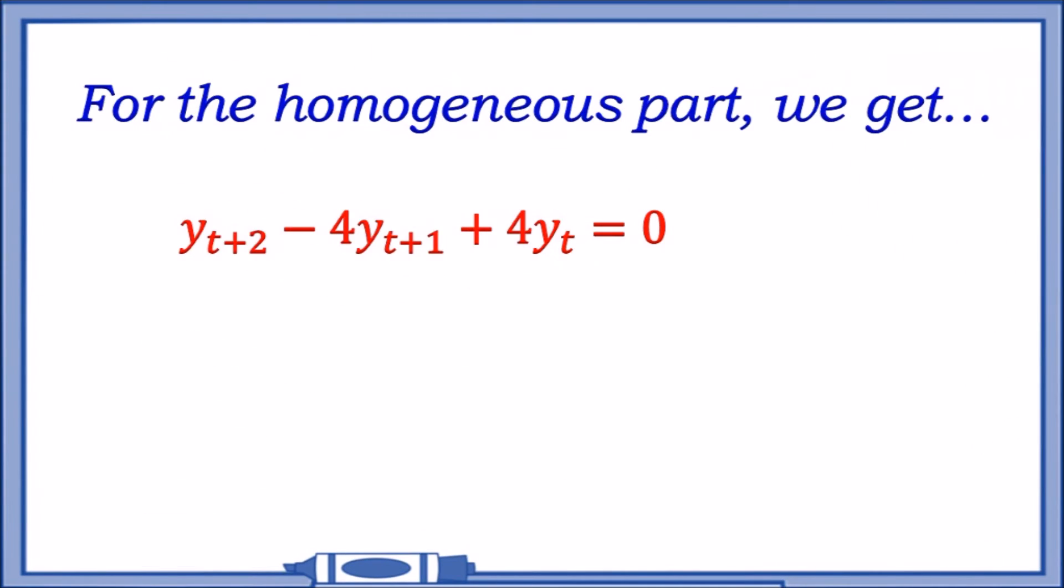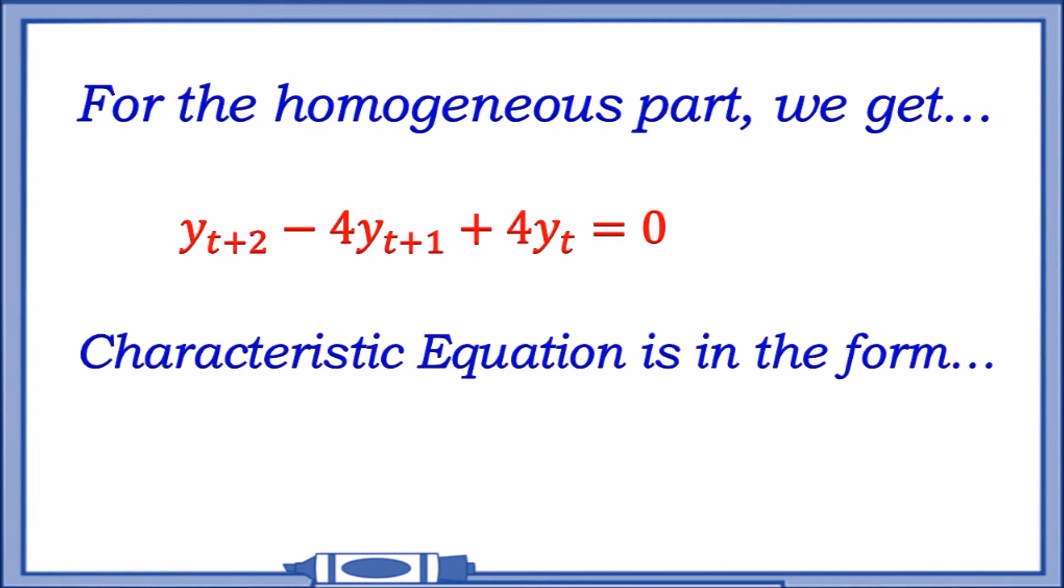We set the left-hand side to equal zero for the homogeneous part. This part is actually known as a characteristic equation. The characteristic equation takes this form: m² - 4m + 4.